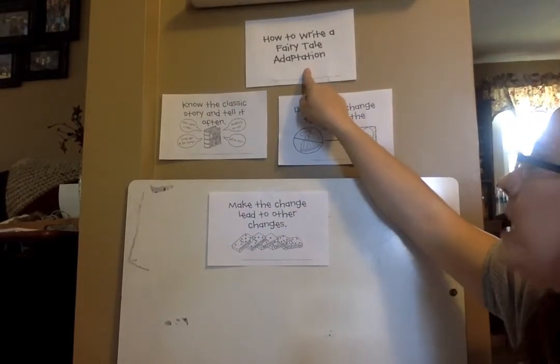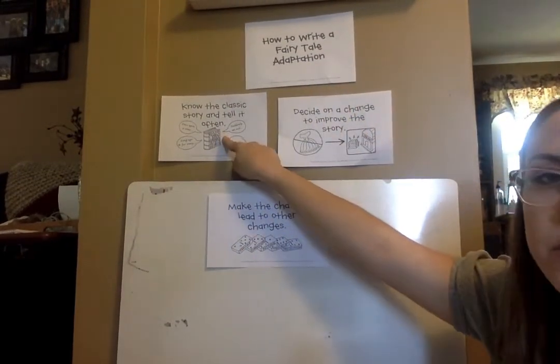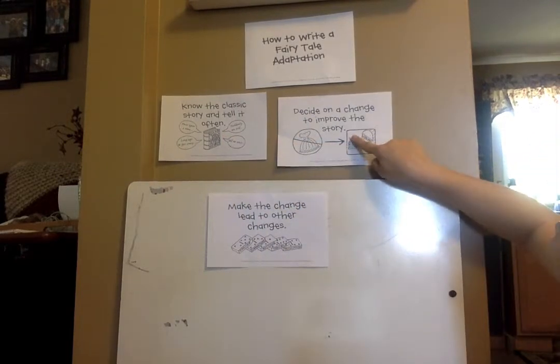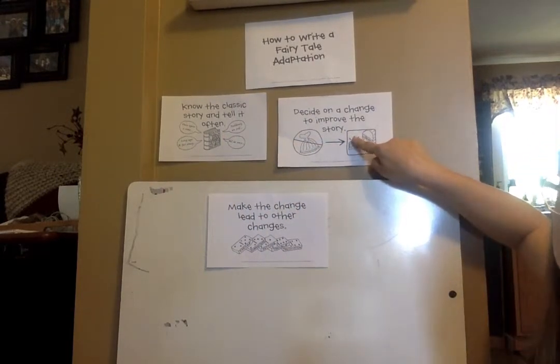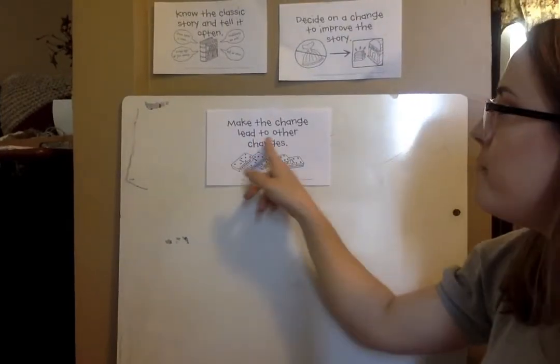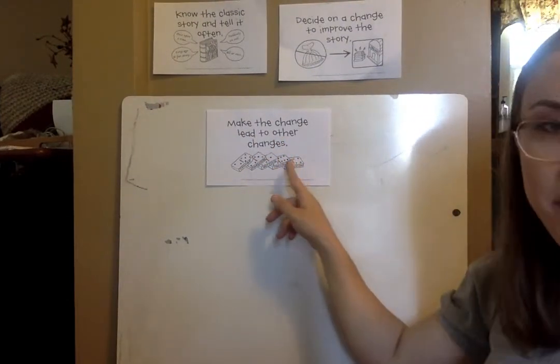We have how to write a fairy tale adaptation. You need to know the story and tell it often. You need to decide on a change to improve the story. And then today we're going to be talking about making the change lead to other changes.